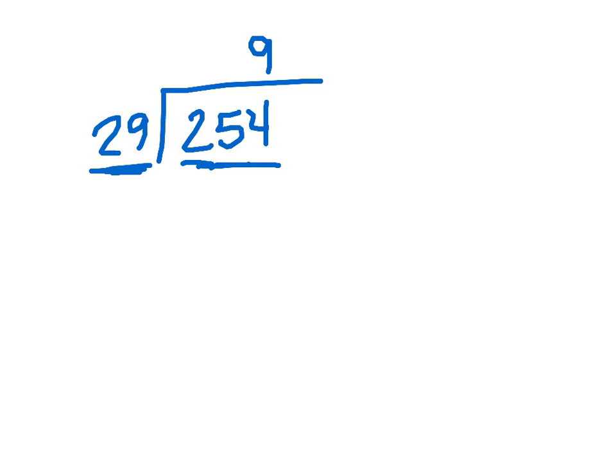When we multiply this out, 9 times 9 is going to give us 81. Okay, 8 there. 9 times 2 is 18, plus the 8, that gives us 26.